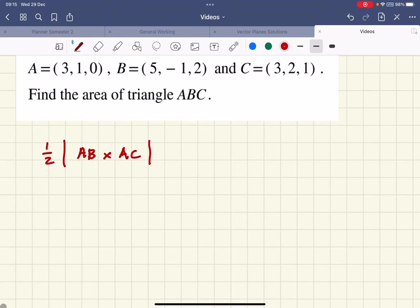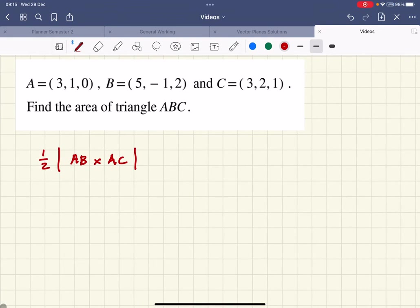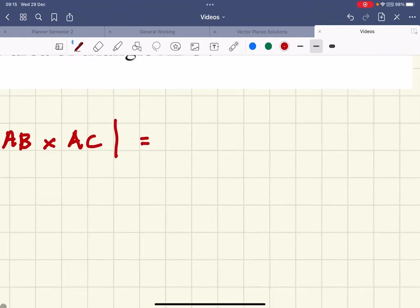So AB is a vector, AC is a vector, and this is the modulus of it. This gives me the area of a triangle, and the proof of this you can find on this page somewhere.